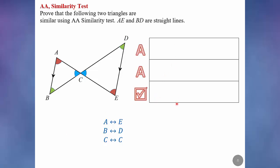The three rows is to remind us to write two AA statements and a conclusion.